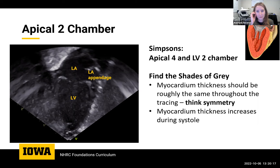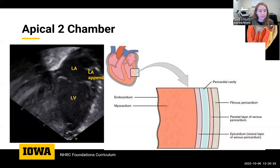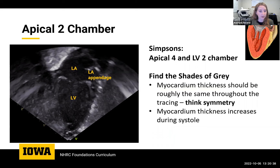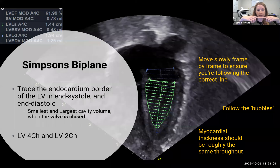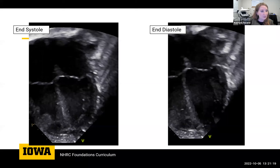Moving into the apical two-chamber view, this view along with the standard four-chamber is used together to measure ejection fraction by Simpson's biplane method. The line you're tracing is the endocardium, the inside of the cavity — don't get confused and trace the pericardium. We trace the endocardium at both end-systole, the smallest cavity volume, and end-diastole, the largest cavity volume. To make sure you're exactly in the right plane, make sure that the valve on top is closed. Moving slowly frame by frame back and forth helps follow the shades of gray — they look like little bubbles when you're on the right line.